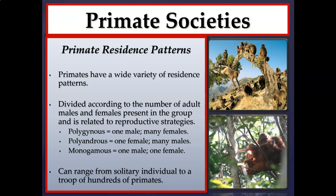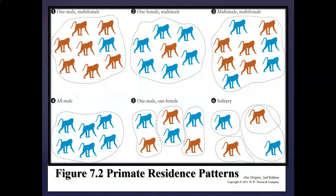This chart shows various forms of residence patterns correlated with reproductive strategy. Red represents females and blue represents males. The first pattern is the one-male multi-female group, seen in gelada and hamadryas baboons and also in gorillas, where one dominant male — the harem master — mates with all the females in that group. That is a polygynous mating strategy.